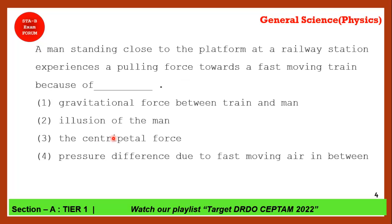A man standing close to a platform at a railway station experiences a pulling force toward a fast-moving train. You must have seen this near a metro or railway platform when a train rushes past. The reason is not gravitation — it is because of the pressure difference due to the fast-moving object. There is less pressure outside and high pressure on the surface of the train, so because of that pressure difference it tries to pull you toward the train. Option 4 is the correct answer.